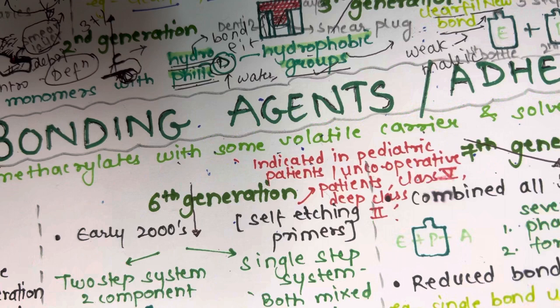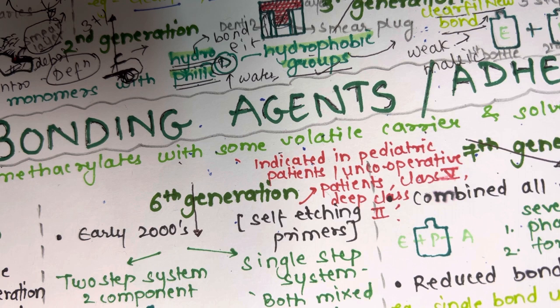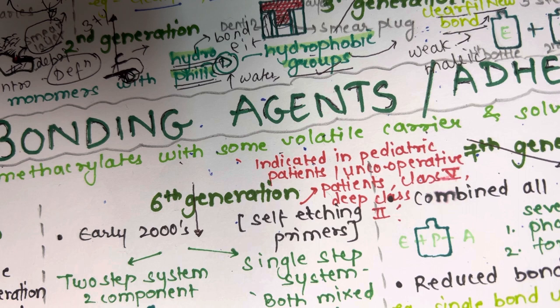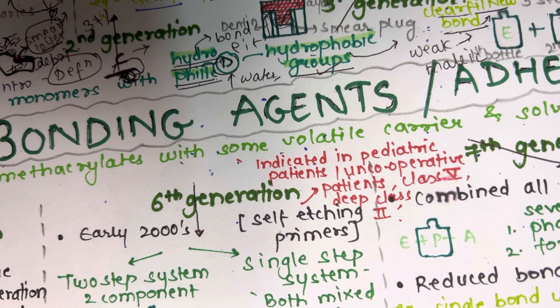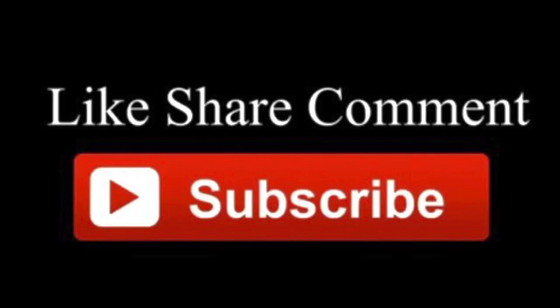This was all about the second part of dentine bonding agent, which is one of the most important long-answer questions from both dental materials and conservative dentistry exam perspectives. The topic is being broken into three parts so you know exactly what to write for maximum marks. I hope you found this video helpful. Please like, comment, share, and subscribe. Thank you so much.